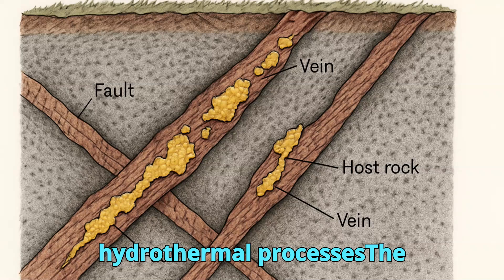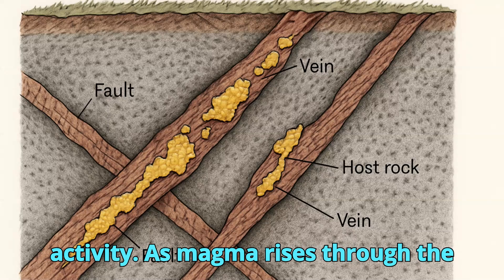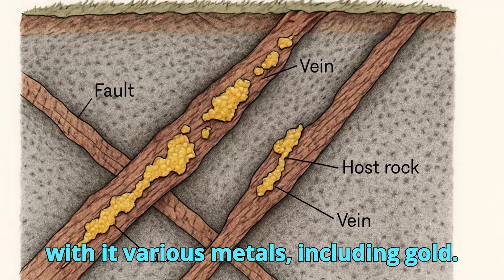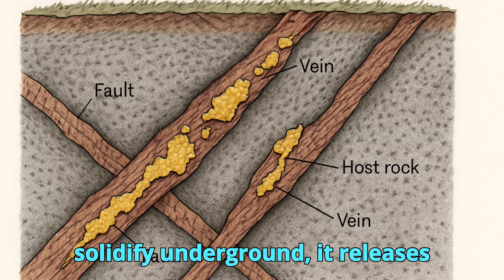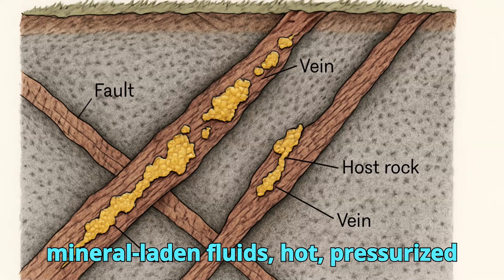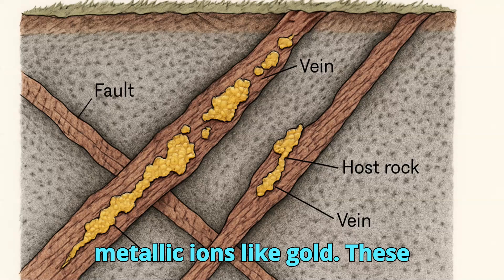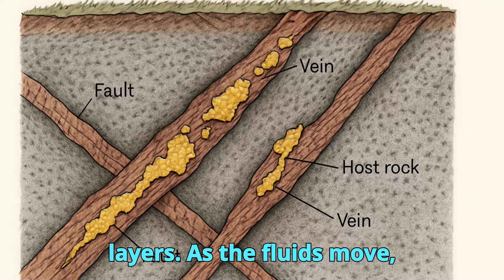Magmatic and hydrothermal processes. The formation of primary gold is closely linked to magmatic and hydrothermal activity. As magma rises through the crust during tectonic activity, it brings with it various metals, including gold. When the magma cools and begins to solidify underground, it releases mineral-laden fluids — hot, pressurized solutions rich in silica, sulfur, and metallic ions like gold. These hydrothermal fluids travel through fractures, faults, and porous rock layers.